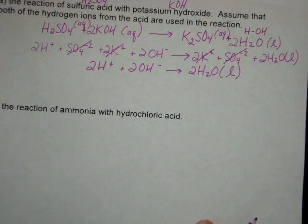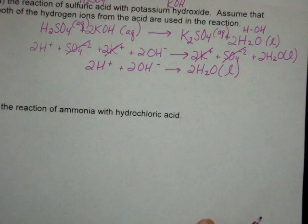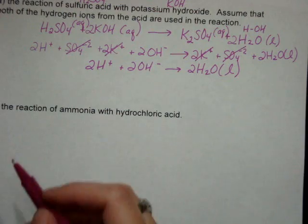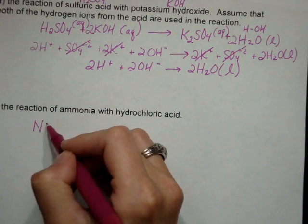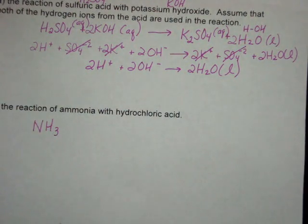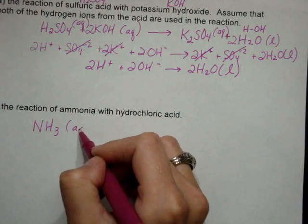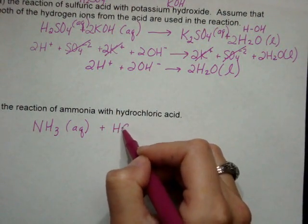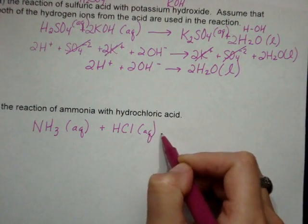Our second reaction is going to be a little bit trickier because we have the reaction of ammonia with hydrochloric acid. Ammonia is NH3. It is aqueous. And then we have HCl, which is also aqueous.